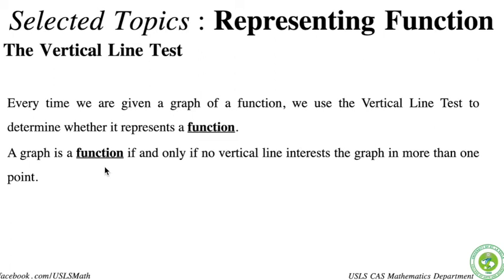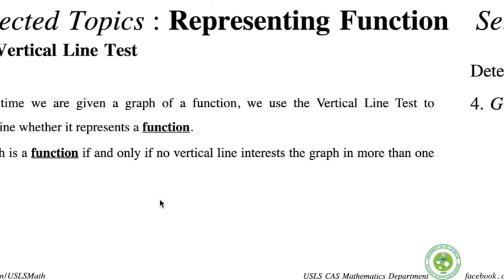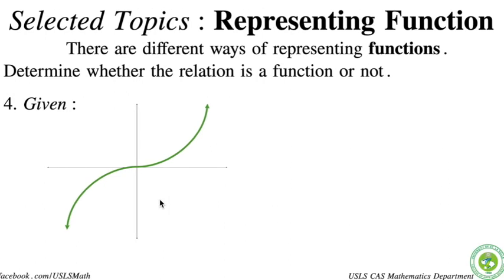What does it say? So the vertical line test is a very simple test to know if graphs are functions or not. So every time we're given a graph of a function, we use the vertical line test to determine whether it represents a function. A graph is a function, listen, if and only if no vertical line intersects the graph in more than one point. Again, if and only if no vertical line intersects the graph in more than one point. Now, how can we illustrate this? Going back with our graph, we will try to see and imagine a line here, a vertical line here, an imaginary vertical line. And then that vertical line should only intersect with our graph once. Only once, if and only if it intersects once. The moment it intersects twice with our graph, it's not a function.